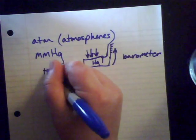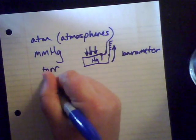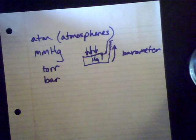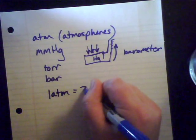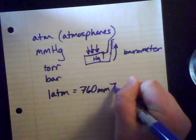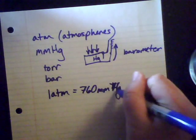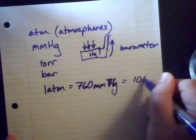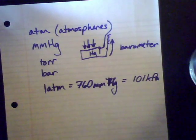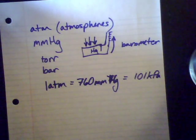Another unit that comes from barometers is torr — a British unit you'll run into as well. You'll also see bar of pressure, another one from the imperial system. In terms of interrelatedness: one atmosphere of pressure is equal to 760 millimeters of mercury, which is equal to 101 kilopascals. This will help when you're doing conversion factors in your homework problems.